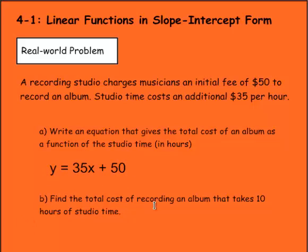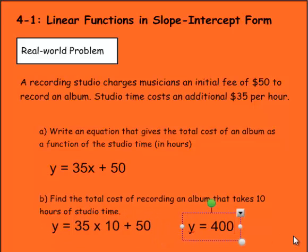Then it says find the total cost of recording an album that takes 10 hours of studio time. So I'd plug in the 10 for the hours. And we know that x became the hour. So we would plug that in for 10. So y equals 35 times 10 plus 50. 35 times 10 is 350. Plus 50 is 400. So I'd say y equals 400. So we're going to say $400 would be the answer.